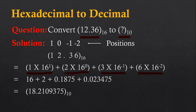These multiplication results are added to get the final outcome, which is 18.2109375. So the hexadecimal number 12.36 has a decimal equivalent of 18.2109375.